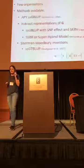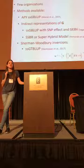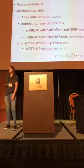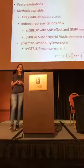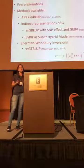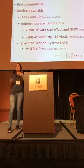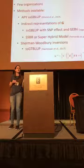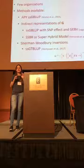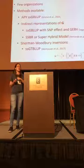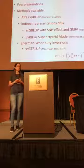As I showed, we now have a lot of genotype data — but not all organizations have this. Few organizations have this scale. There are several methods now able to work with this big amount of data. We have what we call single-step APY, which is what Angus is using. We have indirect representations of G — instead of constructing the genomic relationship matrix and inverting it, we use methods to calculate things like SNP effects, such as what single-step Bayesian regression or the super-hybrid model does.